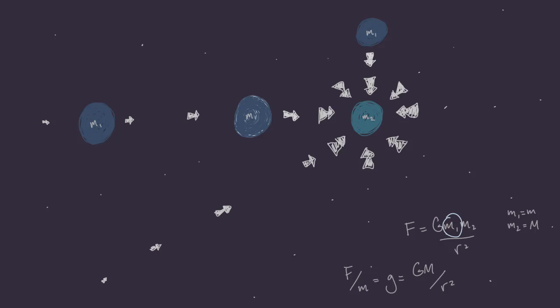We call this field, describing how objects would accelerate, the gravitational field of the source object, in this case, mass 2.